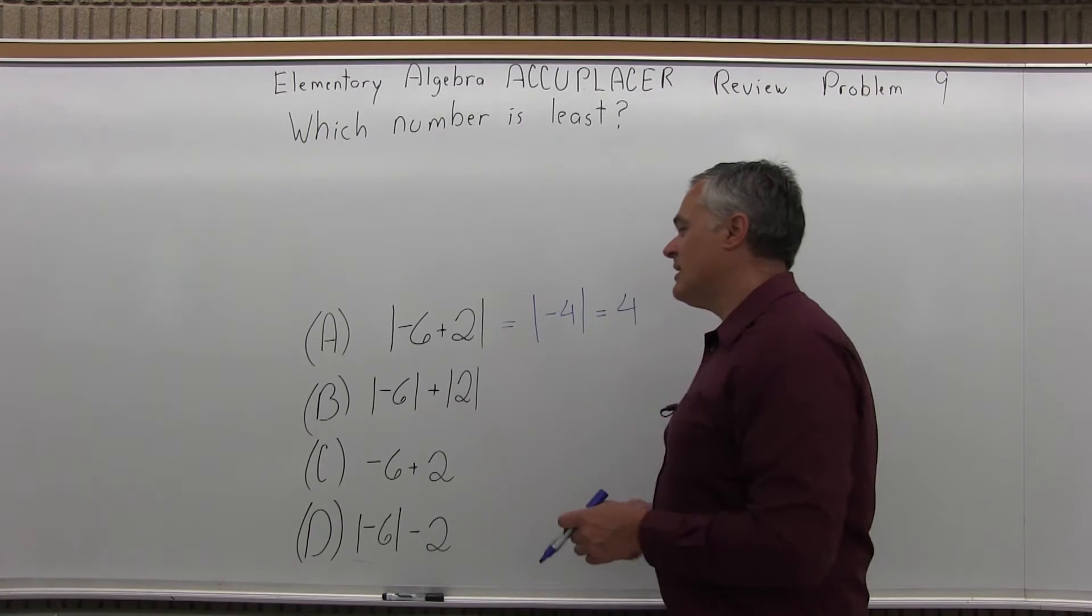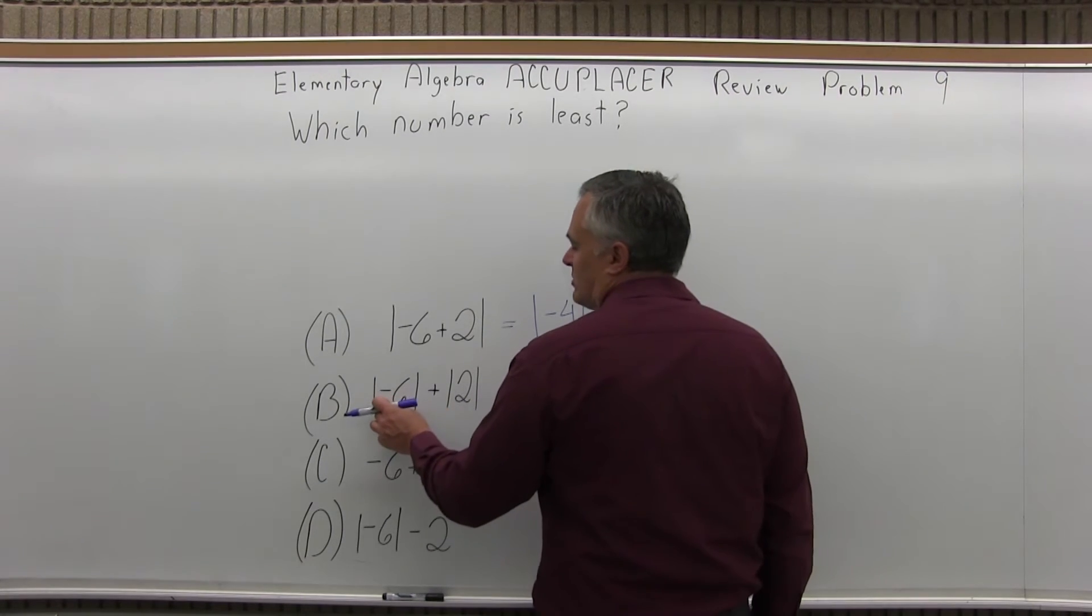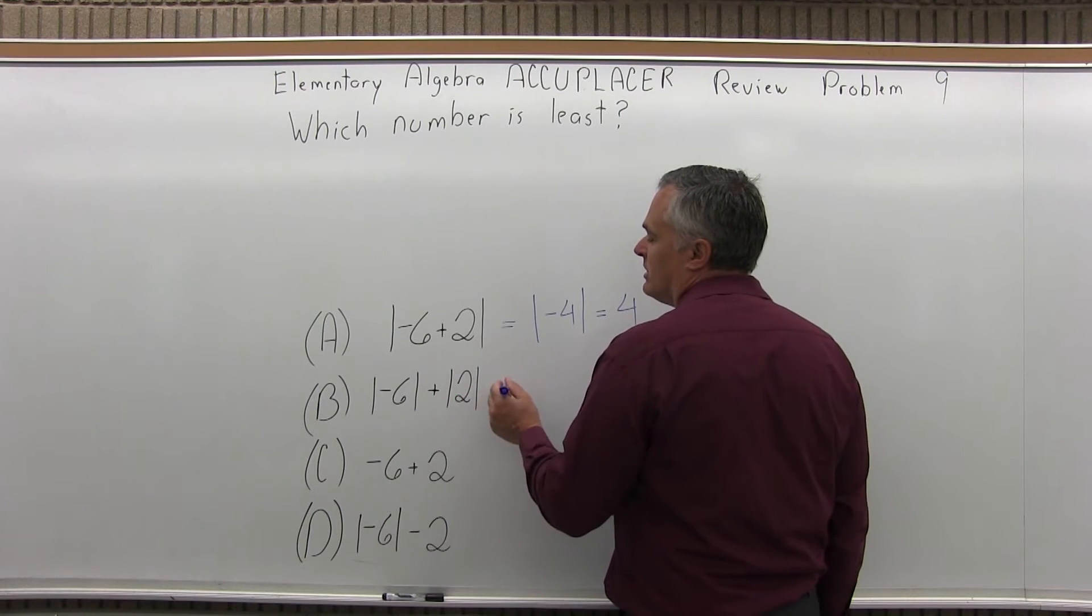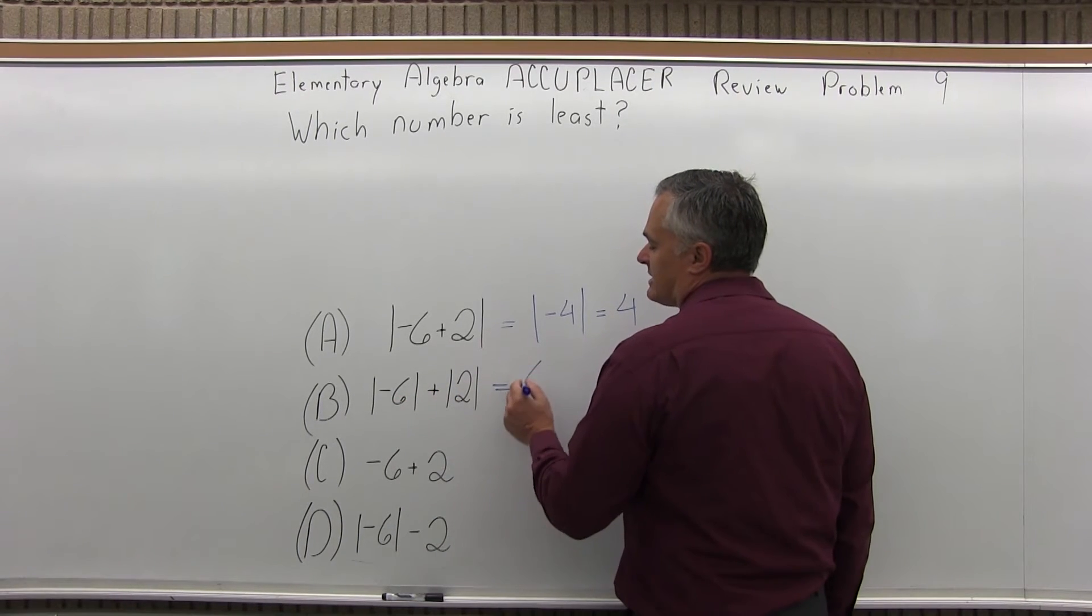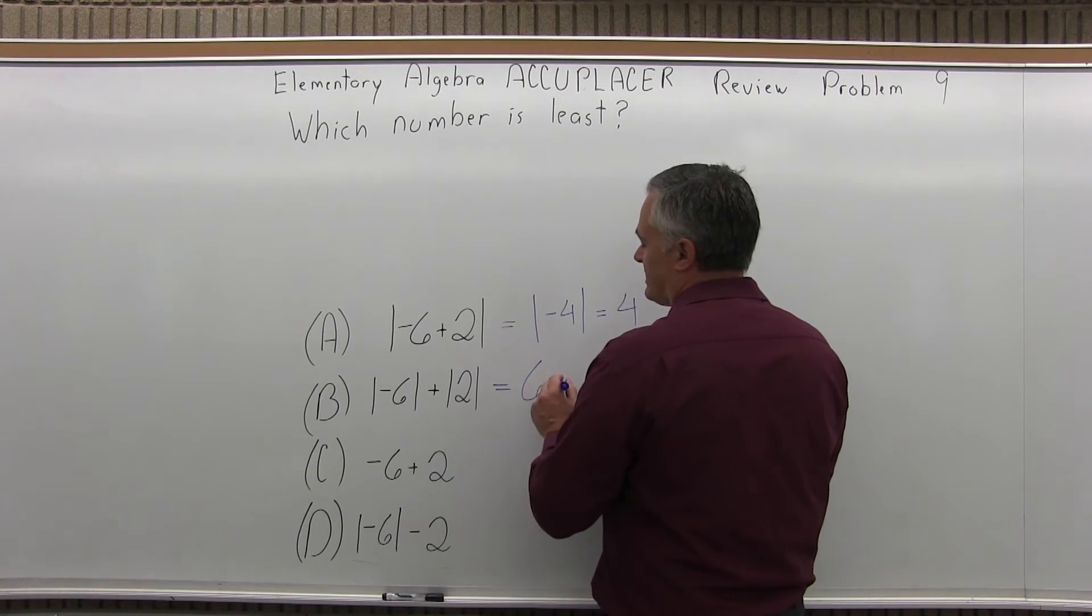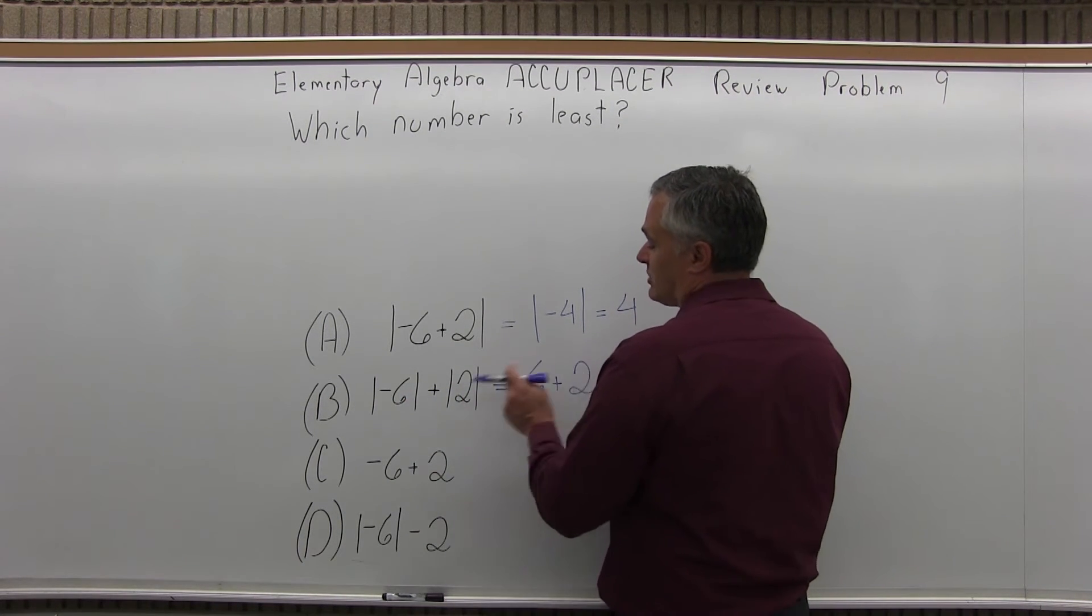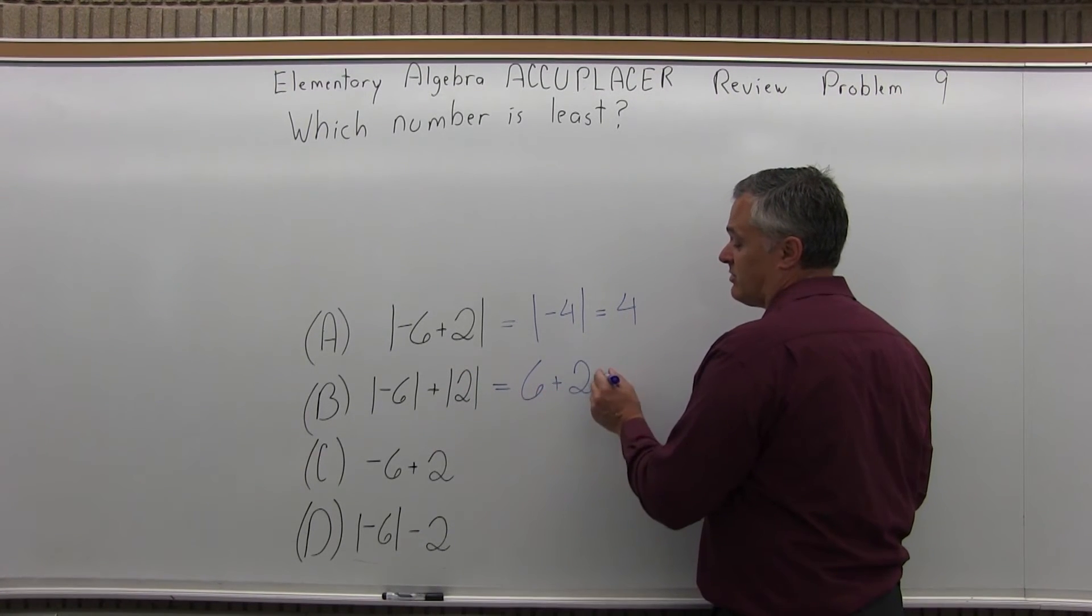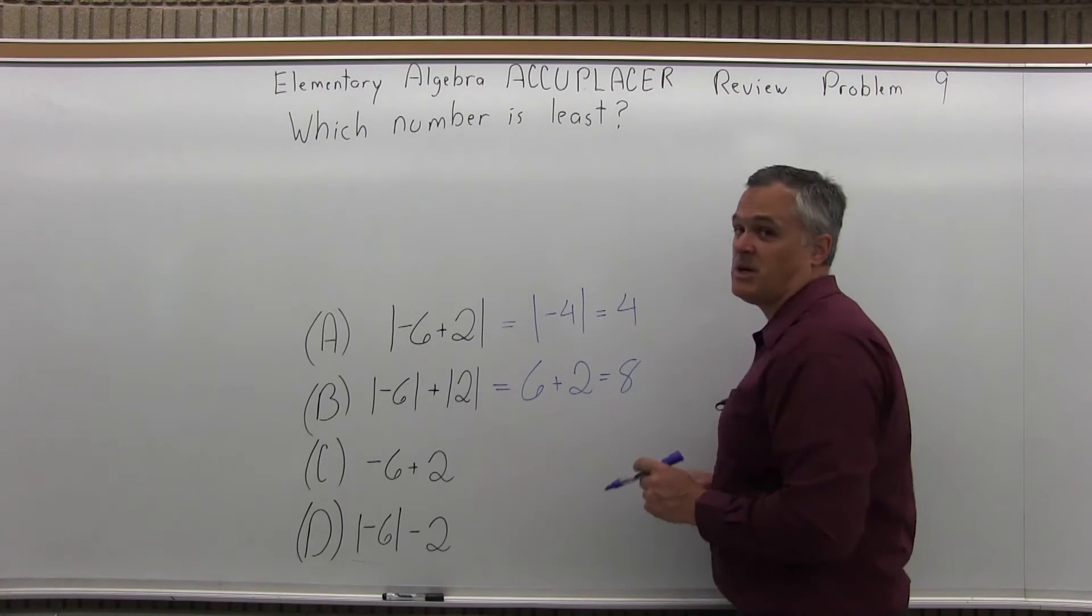Now B is absolute value of negative 6 plus absolute value of 2. So absolute value of negative 6 is 6, keep the number the same and make sure it's positive, plus absolute value of 2. Again keep the number the same, make sure it's positive, so you wind up with 6 plus 2, both positive and the answer is positive 8.